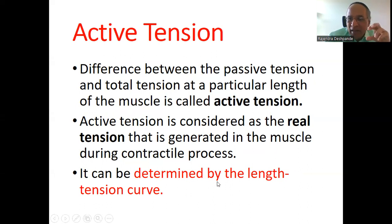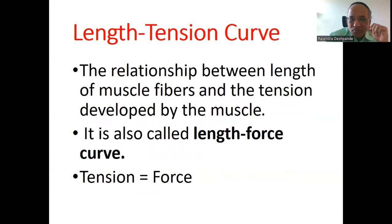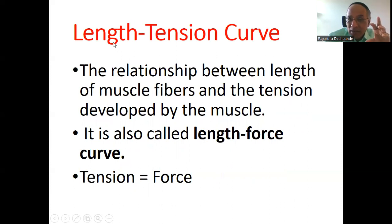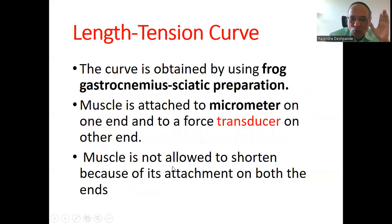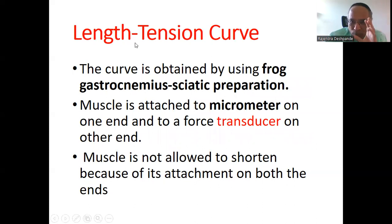Active tension is considered as the real tension generated in the muscle during the contractile process. It can be determined by the length-tension curve — this graph is called the length-tension curve. The relationship between the length of the muscle fiber and the tension developed by the muscle is explained by this curve. It is also called the length-force curve, because tension is equal to force. The curve is obtained by animal experiment; specifically, the frog experiment is used to plot this length-tension curve.